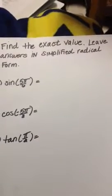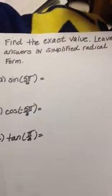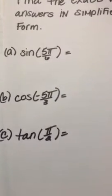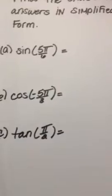Find the exact value, leave answers in simplified radical form. So the first question is sine of 5 pi over 6.